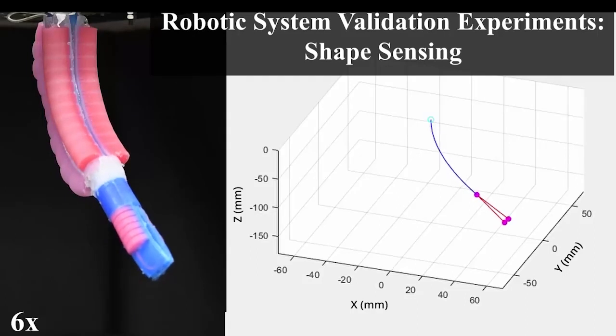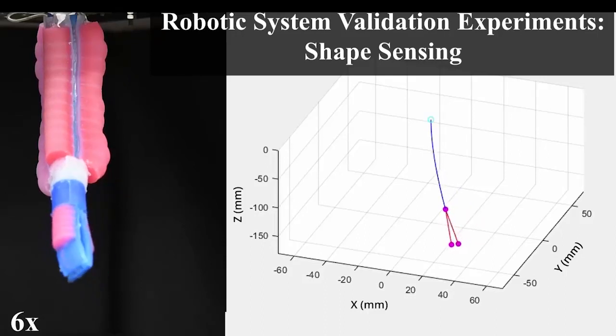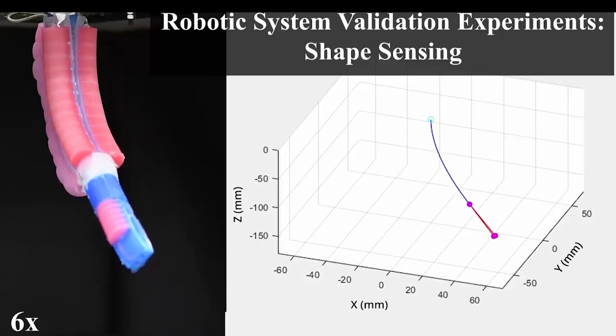This video shows a real-time shape sensing of the robot and tracking of the gripper opening and closing via graphical user interface. The system is able to accurately track its shape from its base configuration through a range of motions and returning back to its starting position.